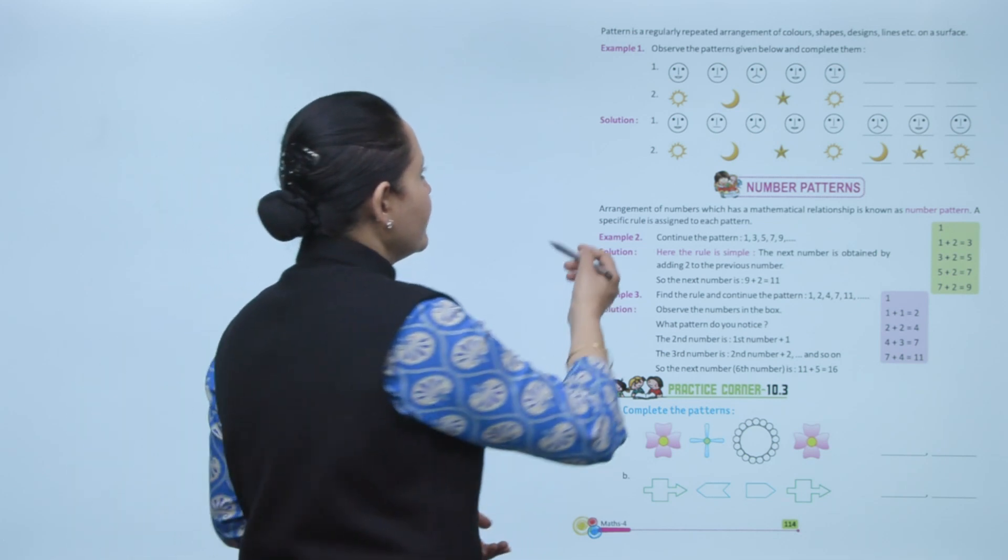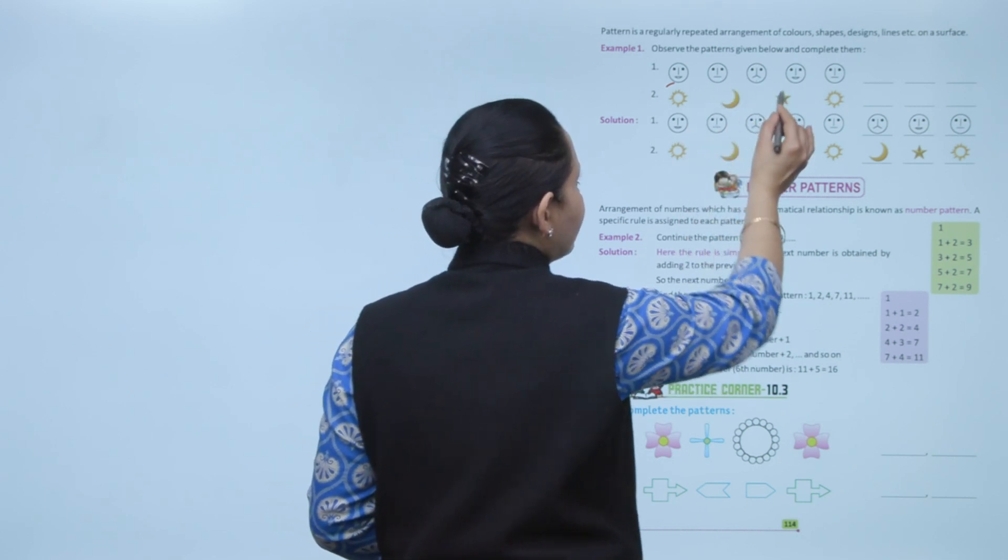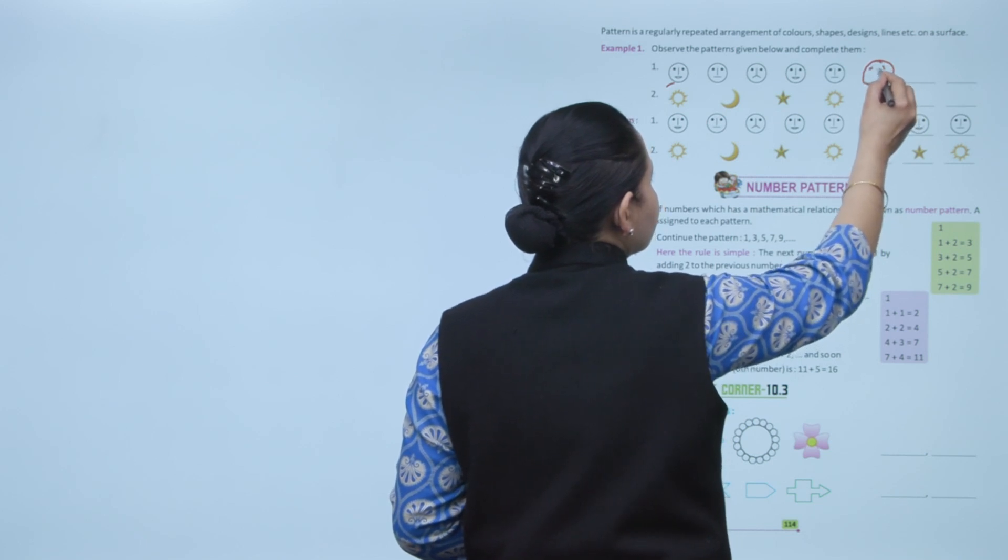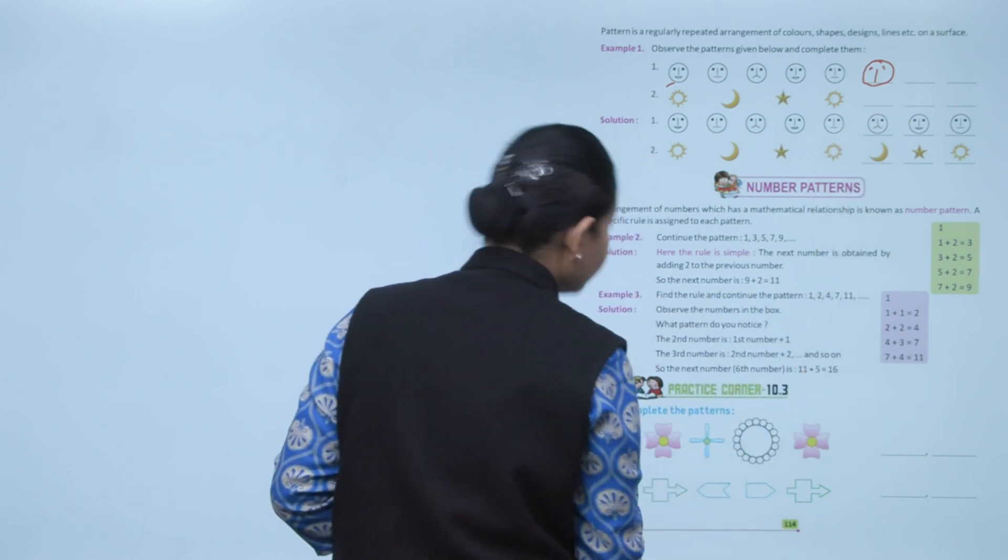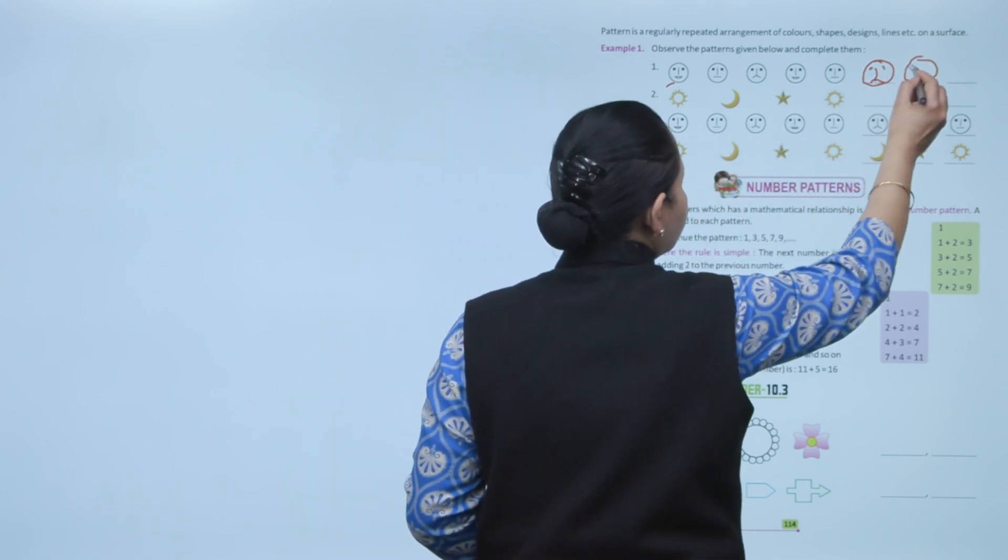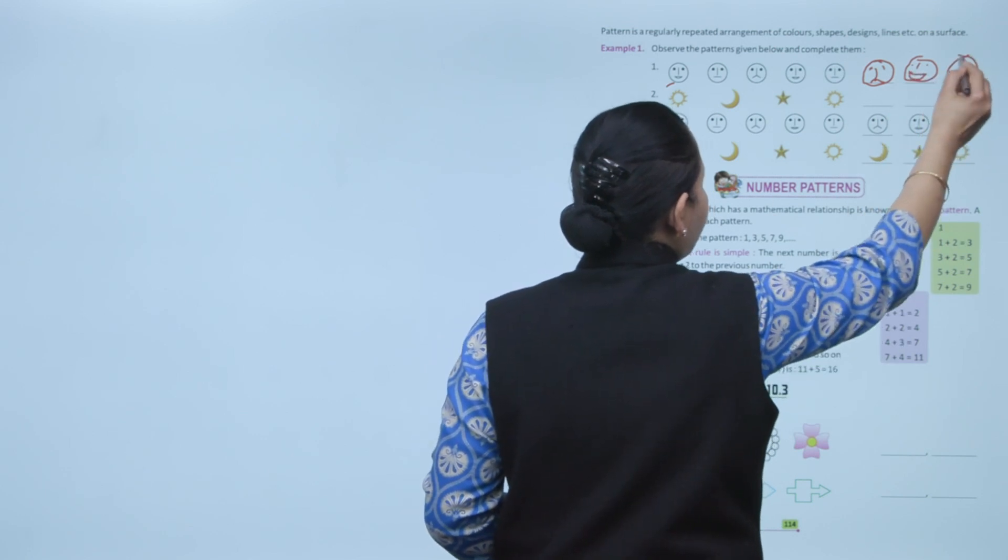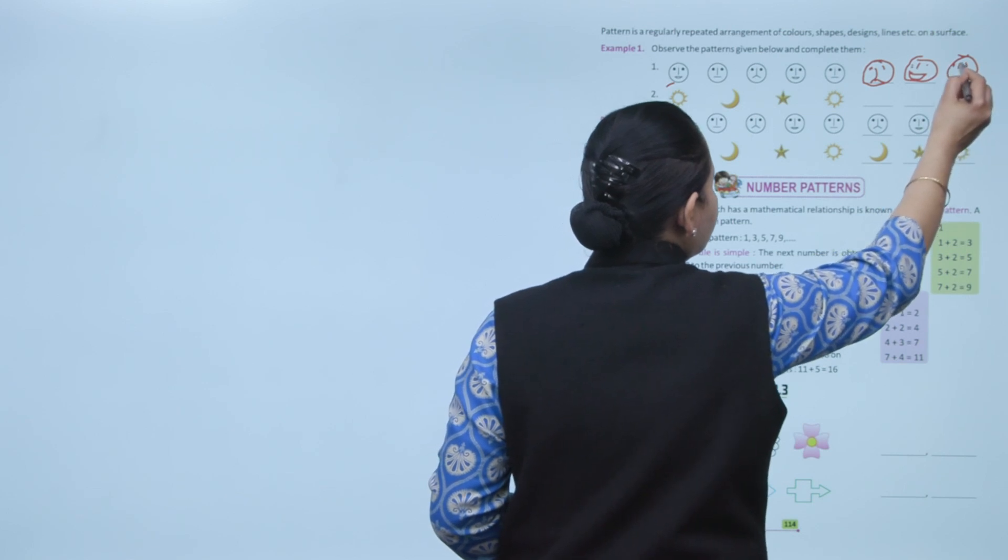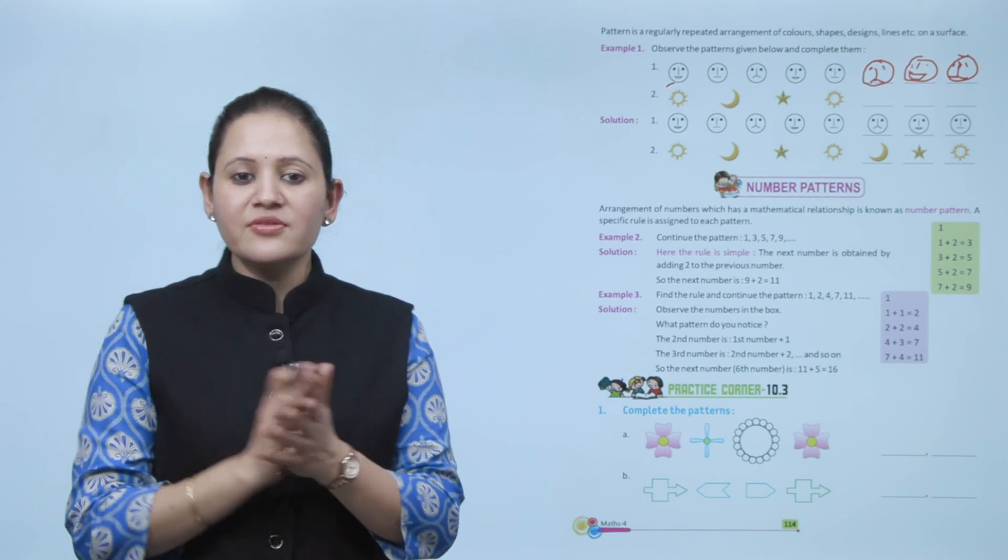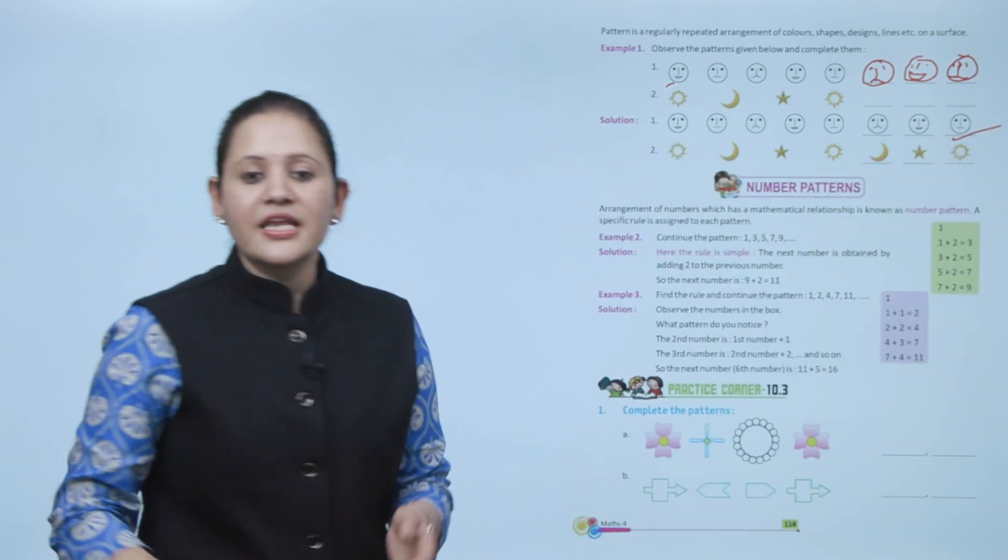Observe the pattern given below and complete them. Here first one is a smiley, then this line is straight and this is like this, then again a smiley like this and the next one. The pattern gets repeated. First we'll have to observe the pattern and then we'll see what pattern is following and accordingly we'll do it. This is the pattern following here. Next is number pattern.